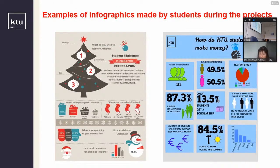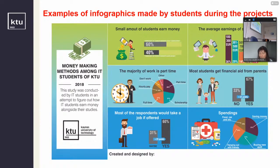Here are some examples of what students made during the project. They collected data via online surveys and had to present this data in the form of infographics. For example, the first one was 'How do IT students celebrate Christmas?' — because the research was done before Christmas. The second one was 'How do KTU students make money?' Another example covered a very similar topic: 'What are the most common money-making methods among IT students at the Faculty of Informatics?' Students also conducted research and represented results in infographic form.